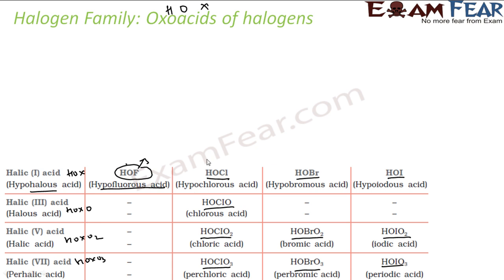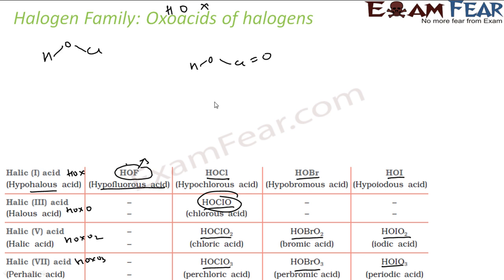Now let's take the shapes of these acids. HOCl has a simple angular shape. Chlorous acid (HOClO) has this shape. Chloric acid (HOClO2) has chlorine bonded to OH and two double-bonded oxygens. Perchloric acid (HOClO3) has chlorine bonded to OH and three double-bonded oxygens.